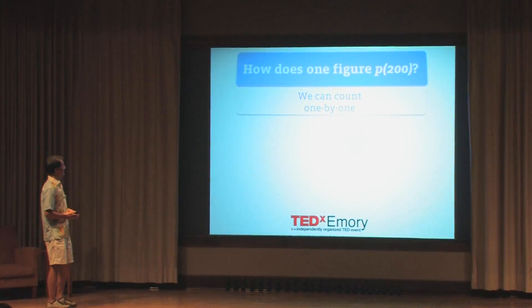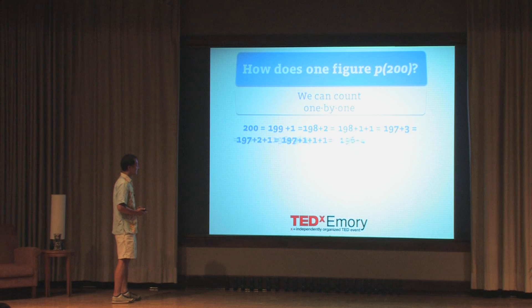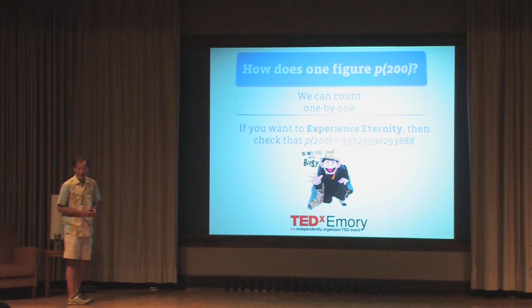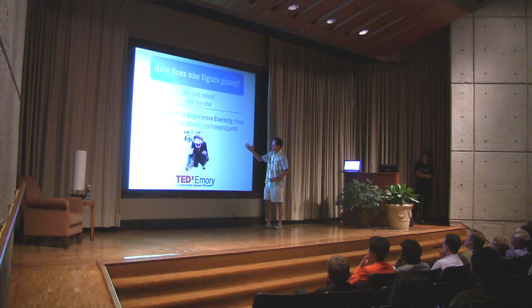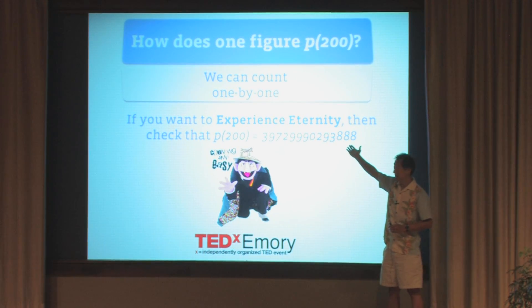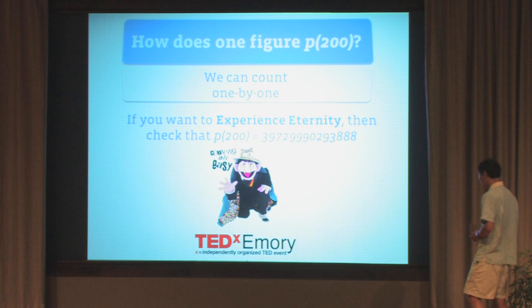You could ask a simple question: how would one figure out P of 200? There is one way: you could count one by one. But despite the fact that this is a conference about experiencing eternity, I definitely do not want to experience that kind of eternity. If you were to actually list all the ways of adding up numbers to get 200 and literally count one by one, you would find the right answer — but the reality is, you never get there. It's not the kind of eternity we want to experience.